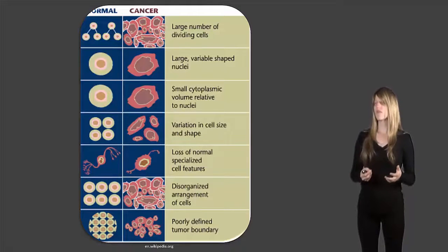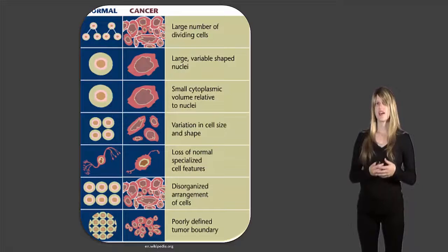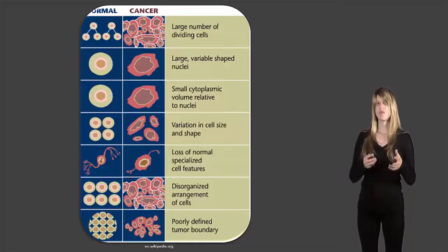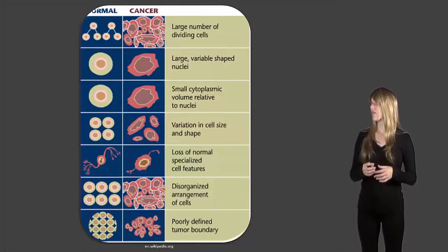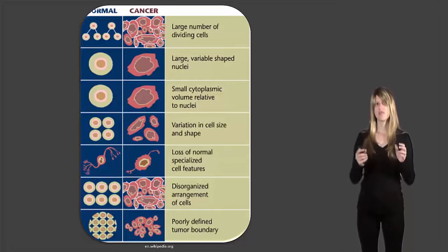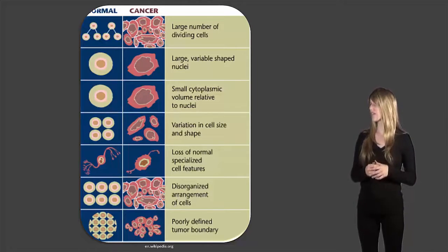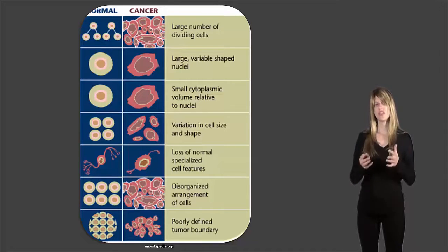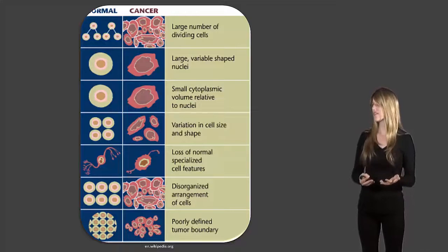Here are some other features. There are a large number of dividing cells in cancer, consistent with how quickly it goes through the cell cycle. The nuclei can be irregularly shaped, and the volume of cytoplasm is much smaller in cancer cells. The actual shape of the cell itself can be irregular compared to what you would expect for that type of cell.